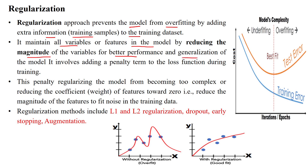We can make that model a generalized model by adding a penalty term to the loss function during the training phase. This penalty regularizes the model from becoming too complex by reducing the coefficient — that means the weight parameters of the respective features — towards 0.